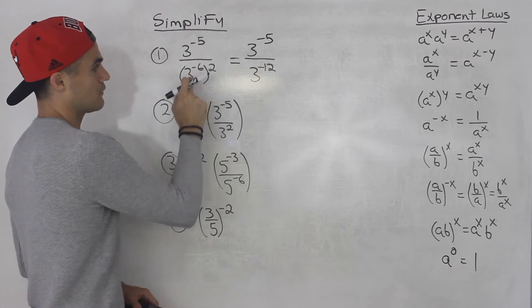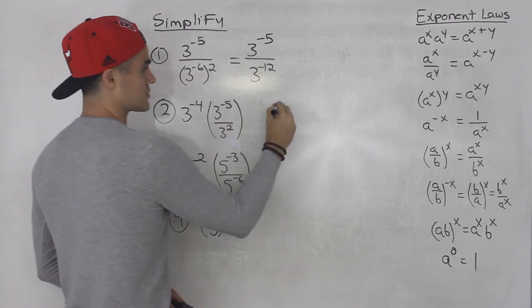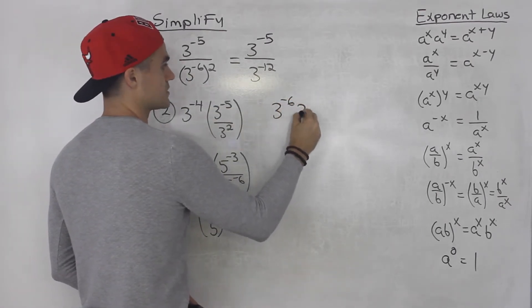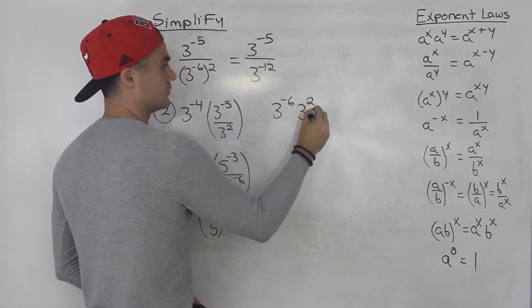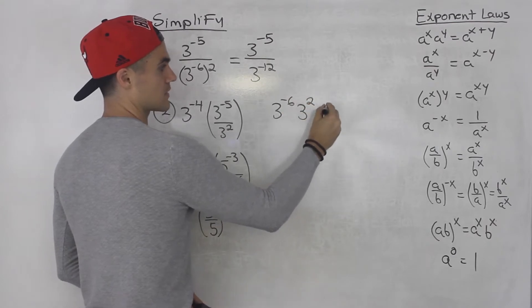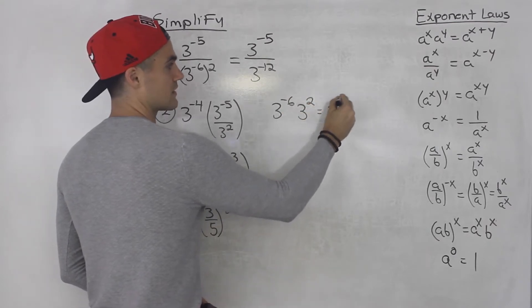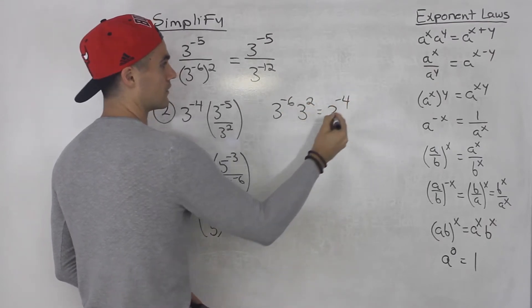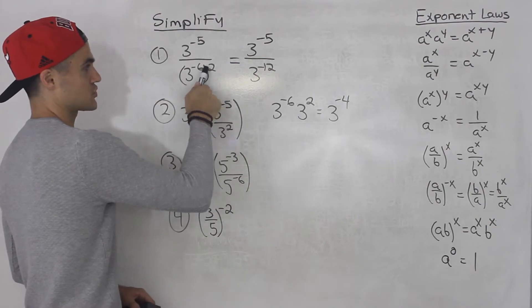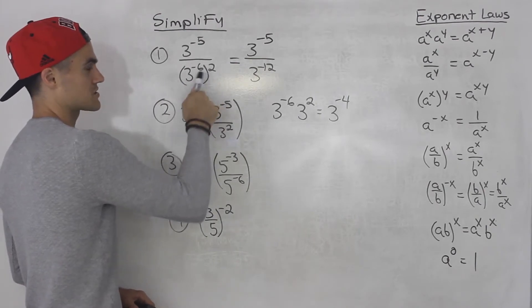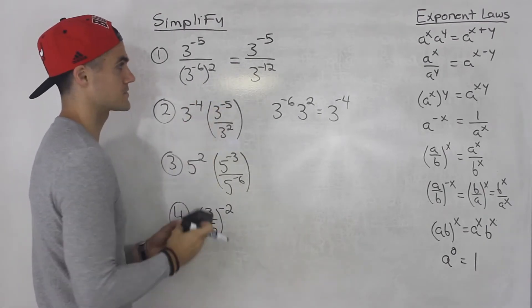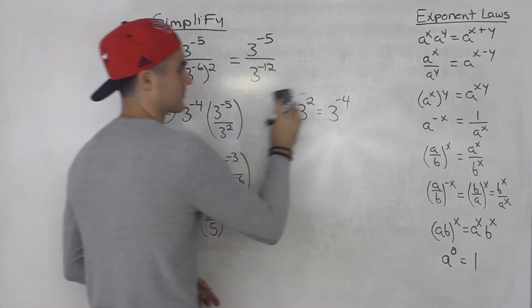Now be careful — if it was 3 to the negative 6 times 3 to the 2, you'd have to add those exponents, giving 3 to the negative 4. But because we're squaring that whole expression, we multiply the exponents instead.